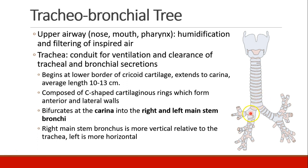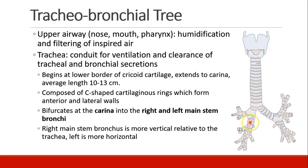The carina bifurcates into the right and left mainstem bronchi. The right mainstem bronchus is more vertical relative to the trachea, and the left is more horizontal. That's why foreign bodies tend to lodge in the right mainstem, and mainstem intubations are usually on the right side.